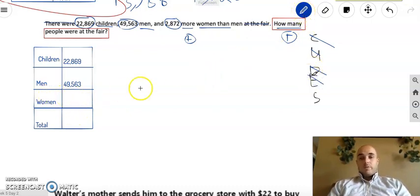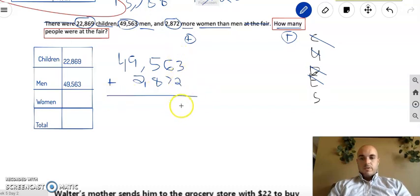And I'll solve. Let's first, we can't find the total without finding the number of women first. So it says there's 2,872 more women than men. So I'm going to take the number of men and add 2,872 to it. So 49,563 plus 2,872. 3 plus 2 is 5. 6 plus 7 is 13, carry the 1. 1 plus 5 is 6, plus 8 is 14. Carry the 1. 1 plus 9 is 10, plus 2 is 12. Carry the 1. 1 plus 4 is 5. 52,435 women. A lot of people. Alright.